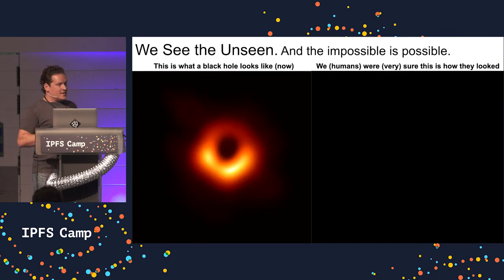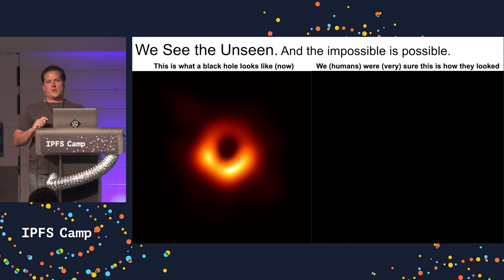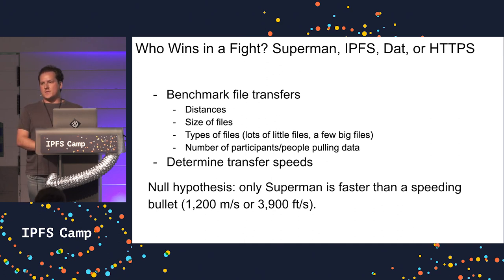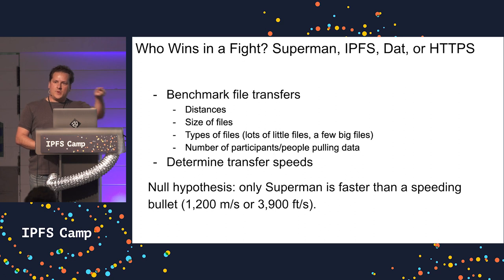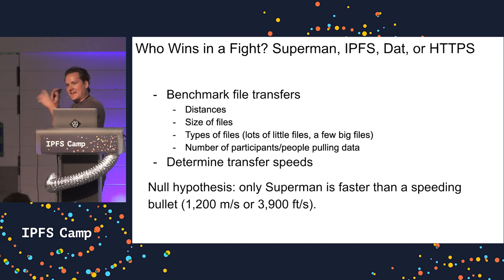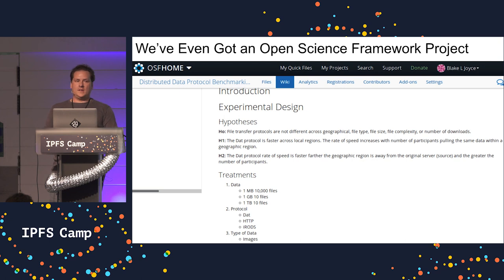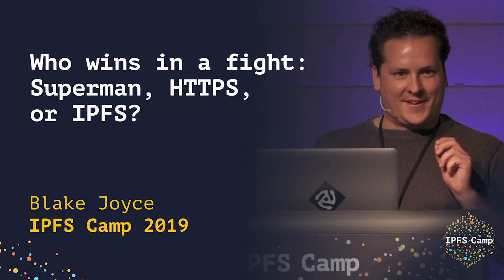This is the image that came back from all that data. So why should you care about helping researchers? If you can help people move this data around, we can do the impossible and we can see the unseen — and I think that's a reason to do anything. I'm heading up a project, a structured experiment to benchmark different distributed protocols. I've already drunk the Kool-Aid — I believe in the distributed web — and now I need the support from you to go back to researchers and say, drink this too. I have an open science framework project with an experimental design. Please come by, talk to me — I would love to talk to you. Thank you.